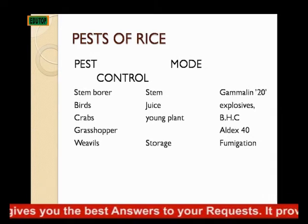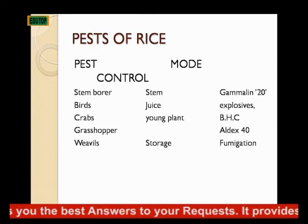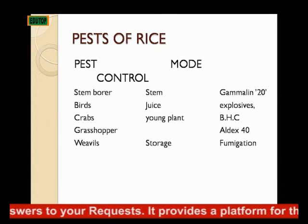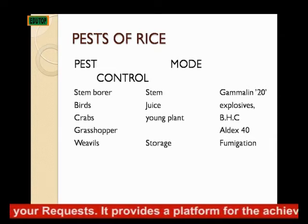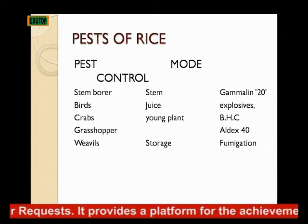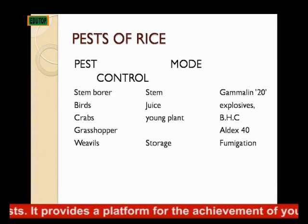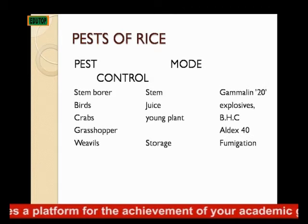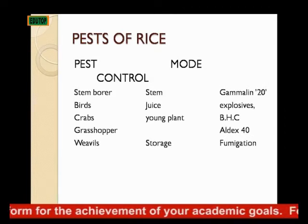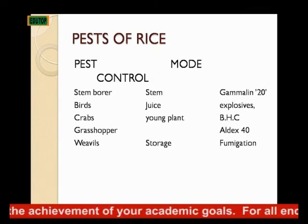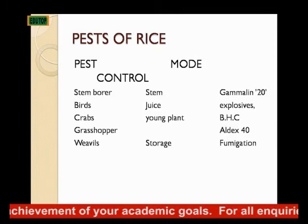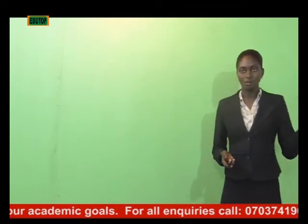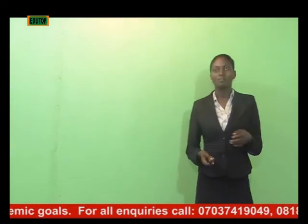Weevil is another pest of rice that affects the rice after you have harvested it in storage. For instance, you go to the market and buy your rice — it might be affected by weevil if it's taking too long in your house. You can control that by fumigating the place you store your rice to prevent the growth of such pests.